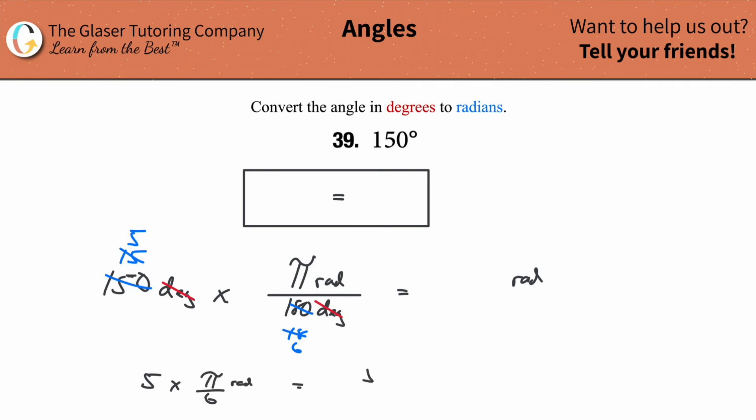And what does that work out to be? Five, well, basically said it. Five pi over six radians. And that's it.